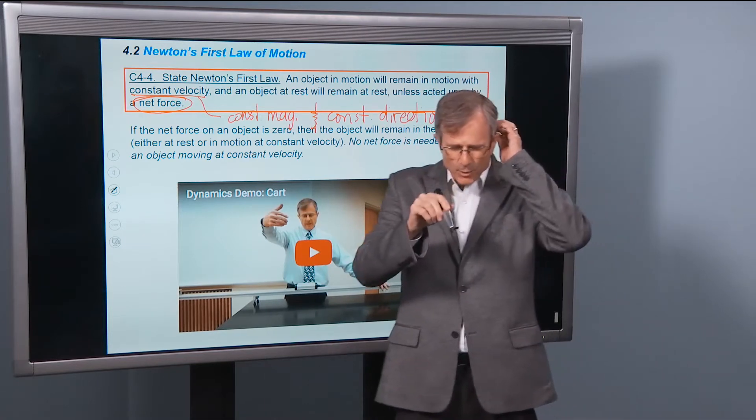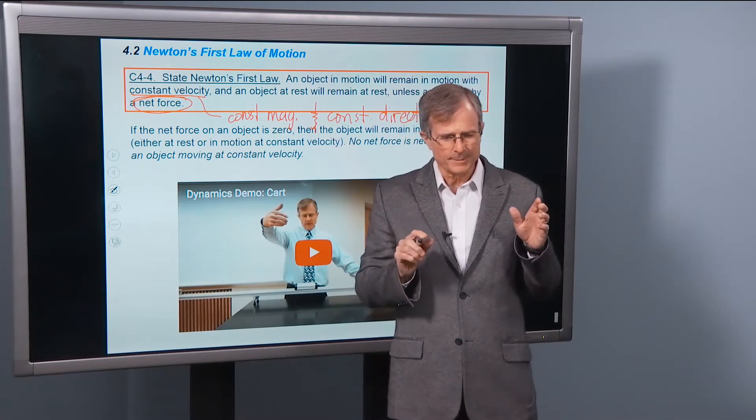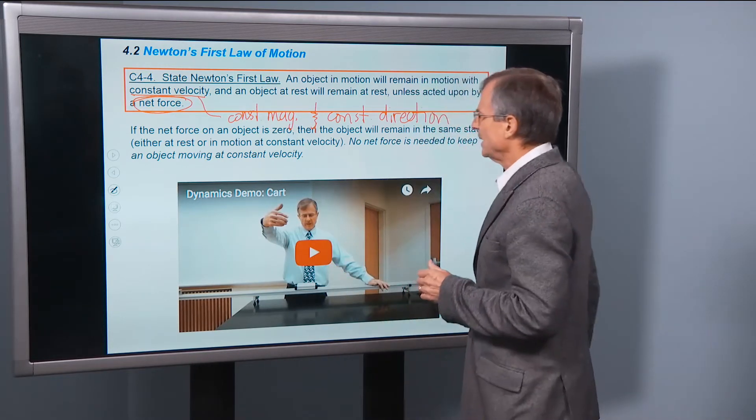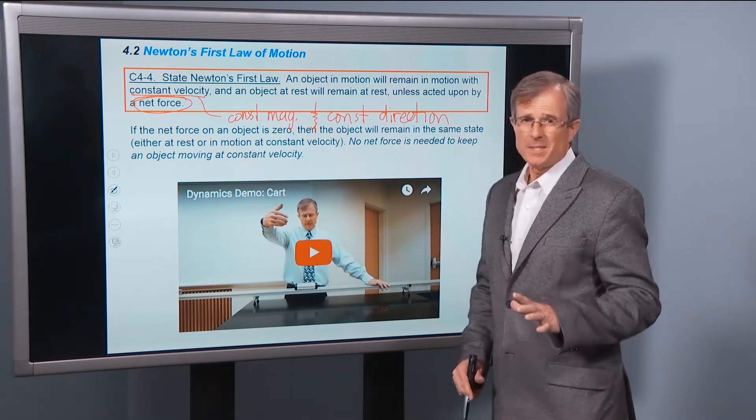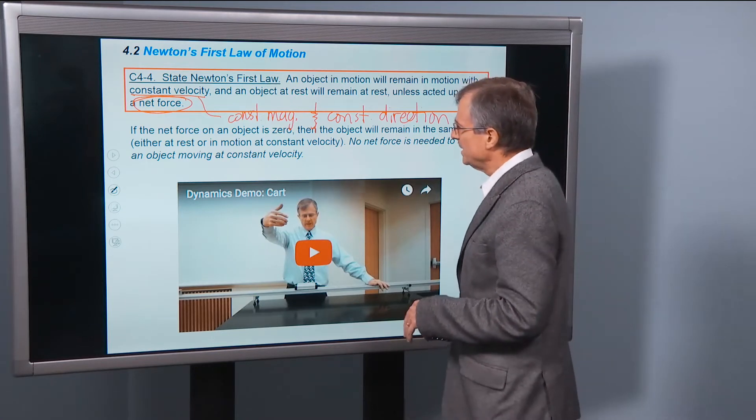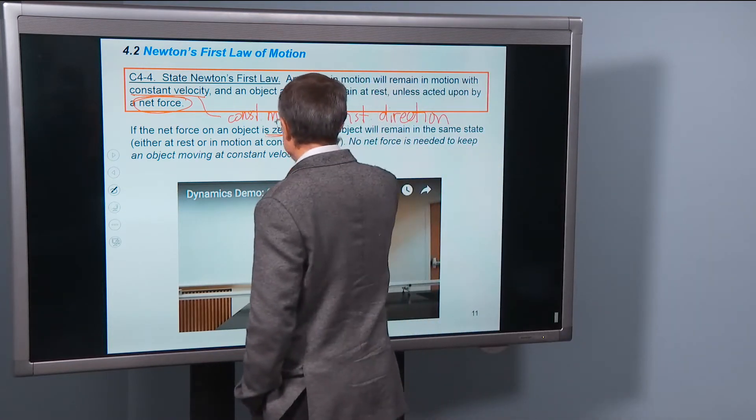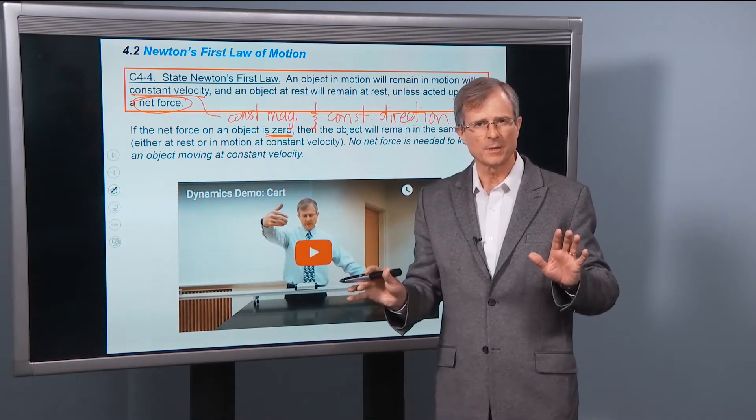And let me remind you what a net force is. It is the vector sum of all the forces. So what this law says is that if the net force on an object is zero, if there's no net force on the object, you add up all the forces on the object.